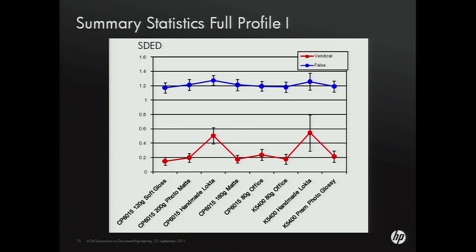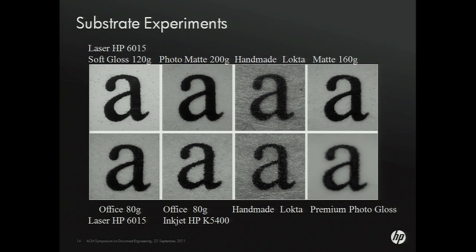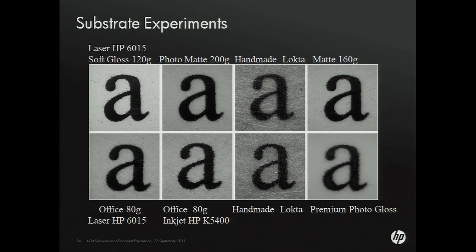The only two paper types that didn't work very well were the handmade paper types, which have a lot of paper structure. This is a counterintuitive result, because you would expect that having more random information would give you more information in your shape description. Yet we found that wasn't the case, and that's because these paper types have a systematic structure to them. What this method is relying on is the random element rather than the systematic element.